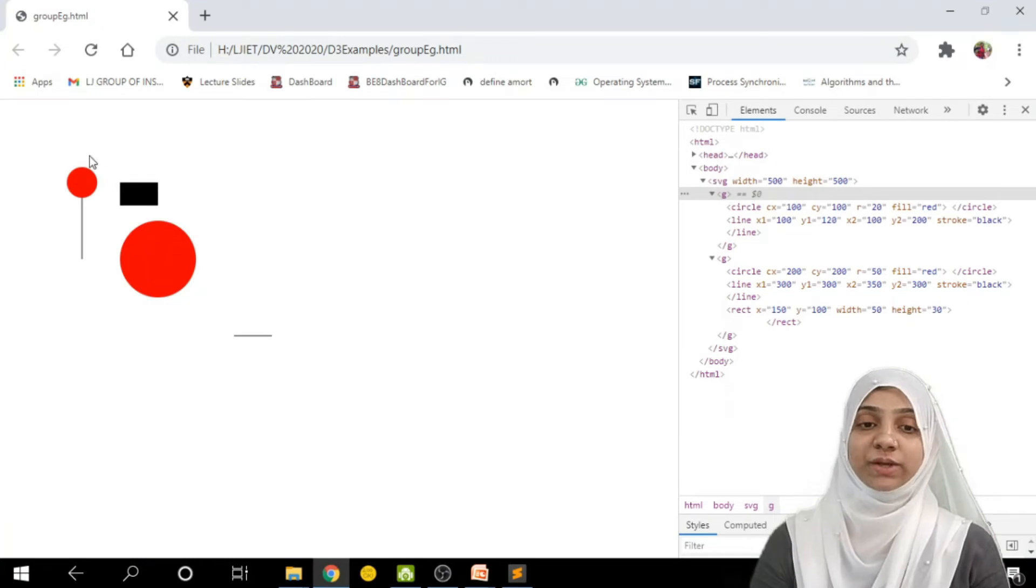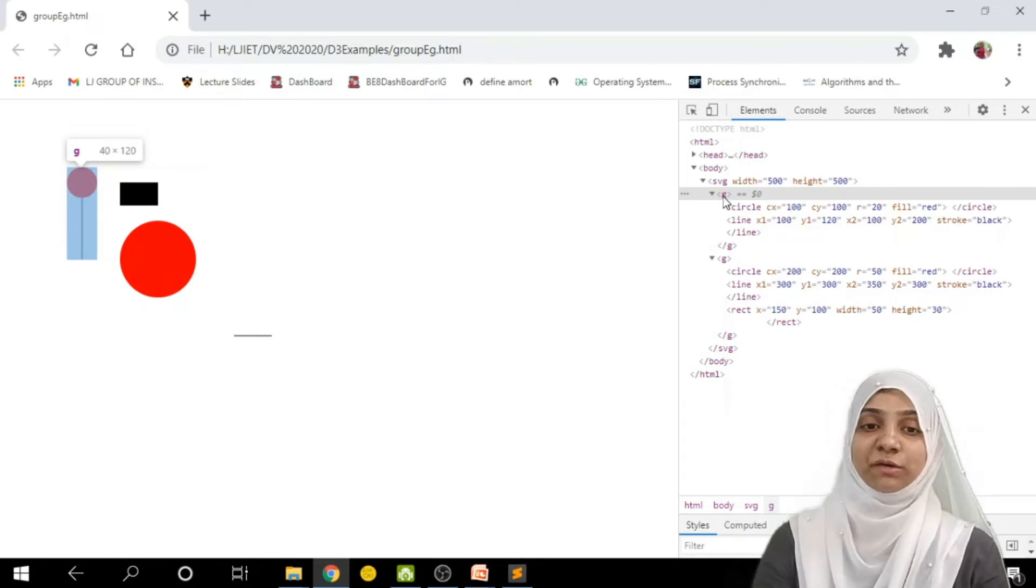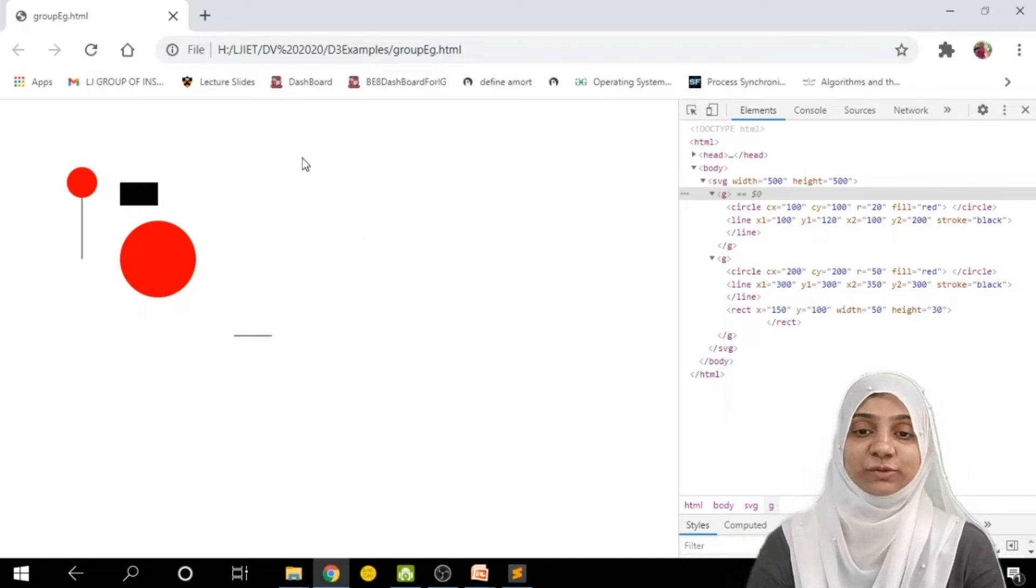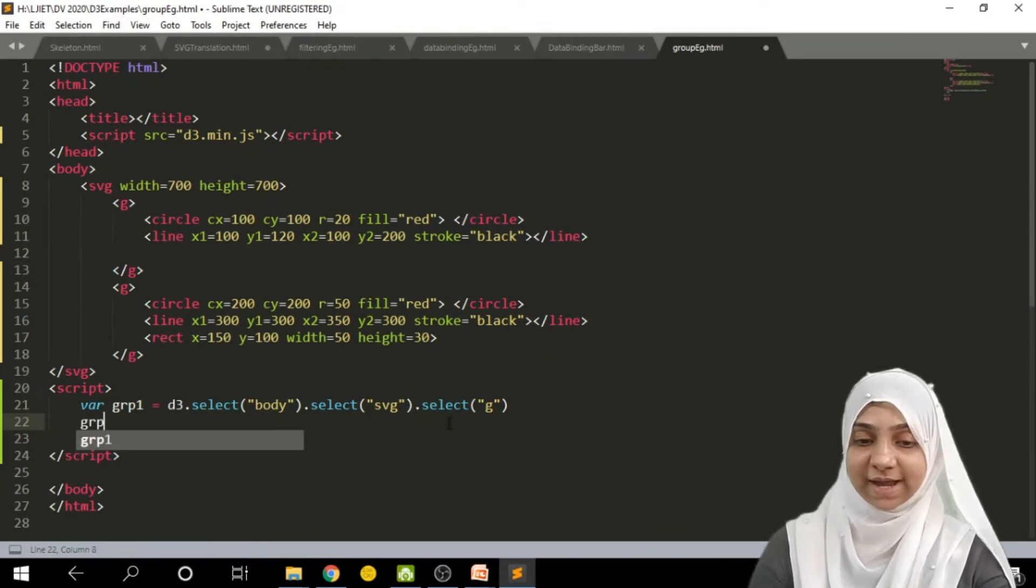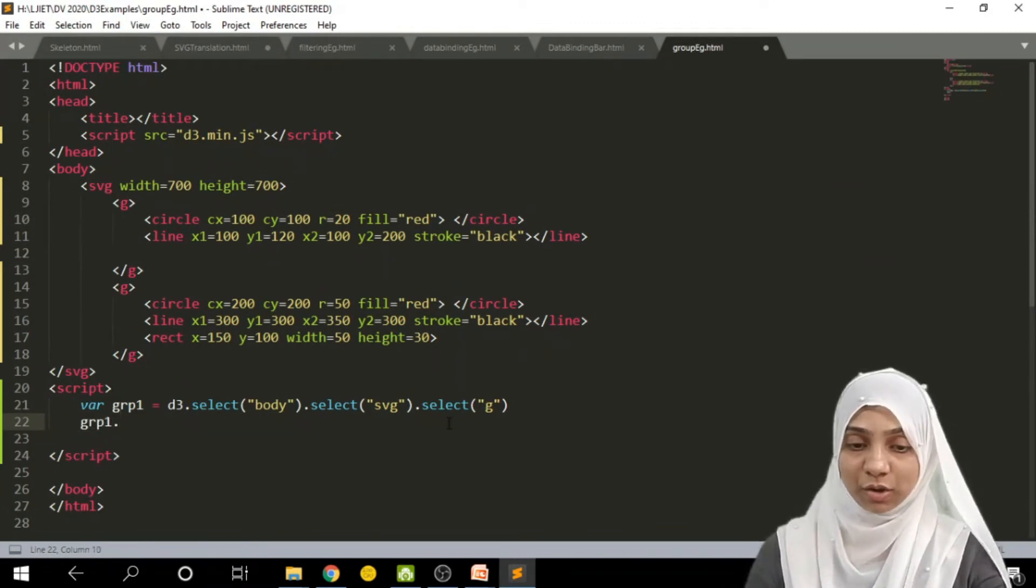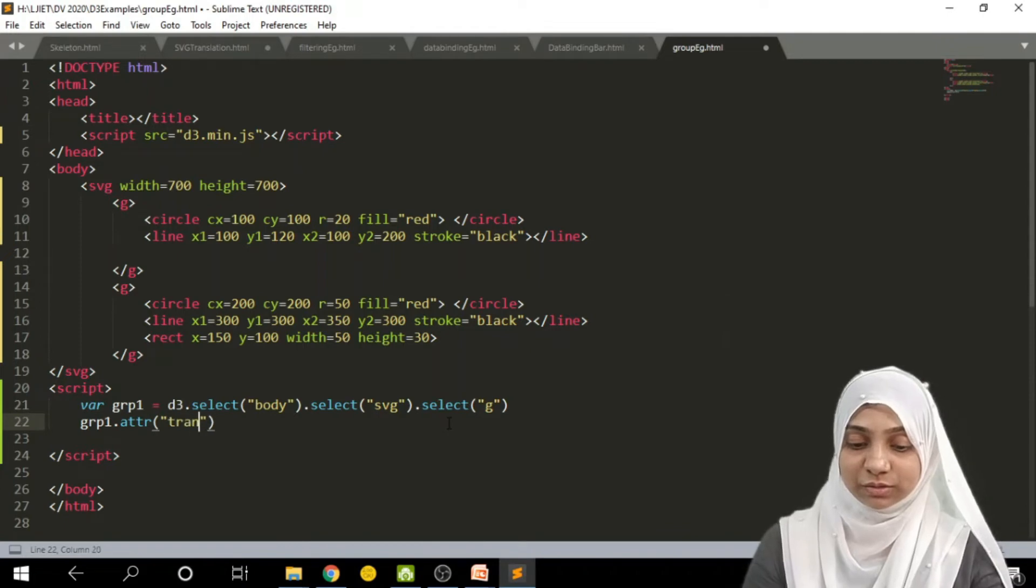So what I wish to do over here, this first group, which is consisting of a circle and a line, that is nothing but a lollipop look-like figure, I wish to translate it from one location to another location. So I will simply add group 1 dot attribute as transform,